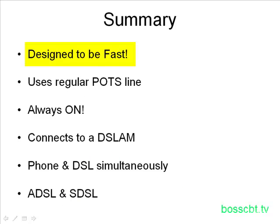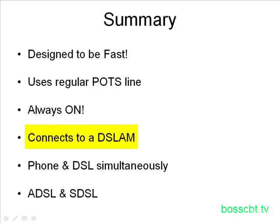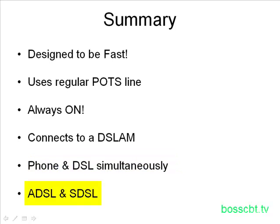Let's summarize what we covered. DSL was designed to be fast, which is why it replaced analog modems for Internet access. It uses a regular POTS line and introduced the always-on concept — you didn't have to dial up every time. On the other end of the POTS line was the DSLAM, where DSL services terminate, offered by your ISP. Both a phone call and DSL can work simultaneously on the POTS line. Finally, there's asymmetric and symmetric DSL, and factors like distance to the CO and cabling quality can affect your speeds. That is WAN connectivity using DSL — thanks for watching.